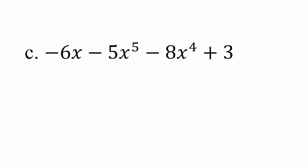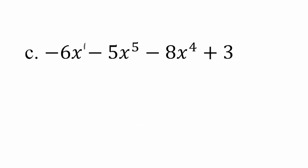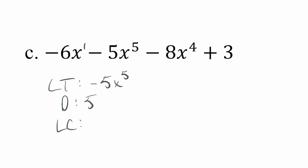This one is definitely out of order. I've got an exponent of 5, an exponent of 4, a constant term (which is like x to the 0), and then 1x implying an exponent of 1. The degree of a constant term is 0 because there are no x's. So the leading term here has degree 5, the degree of the polynomial is 5, and the leading coefficient is negative 5. Always pay attention to the order — do not just go to the first term written.